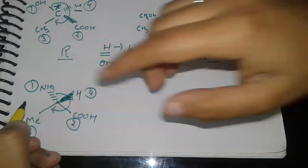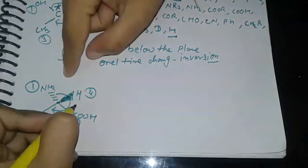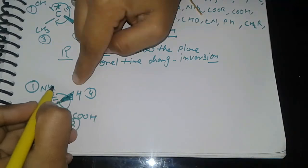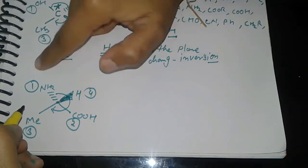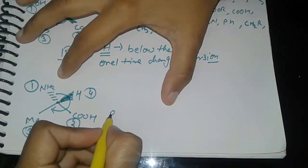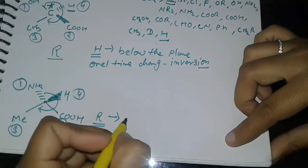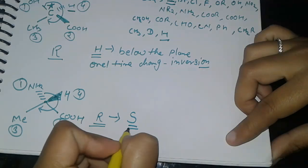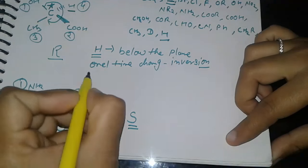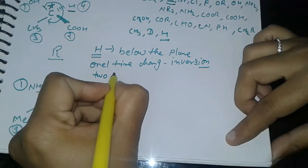So here we're getting clockwise rotation R. But if we see, hydrogen is above the plane, not below the plane. So to bring it below the plane, we need one time change. For one time change, if we're getting R, we have to do opposite.